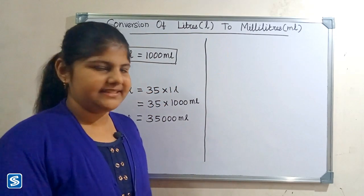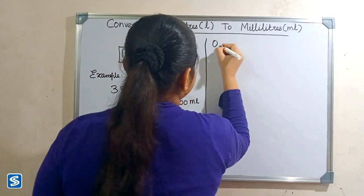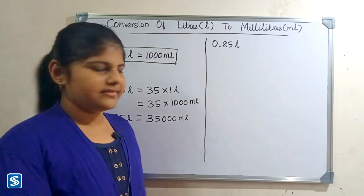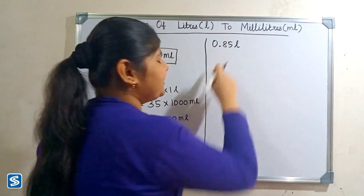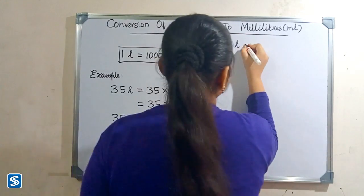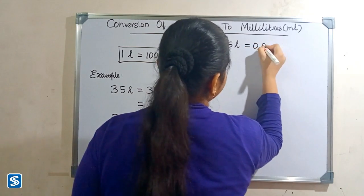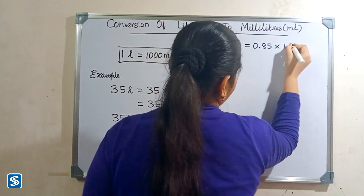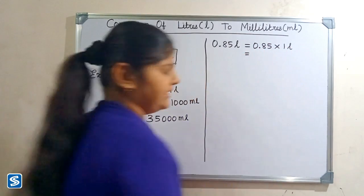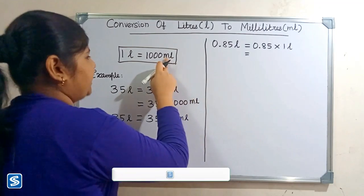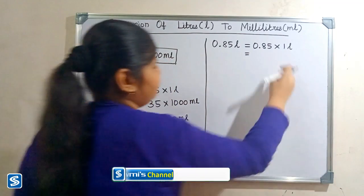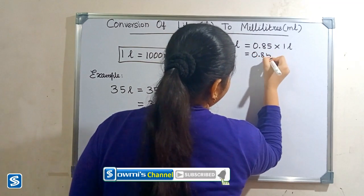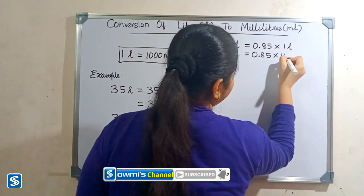For example, we can take 0.85 liters. 0.85 liters can be written as 0.85 multiply one liter. Now we have to substitute one thousand milliliters in the place of one liter, so 0.85 multiply one thousand milliliters.